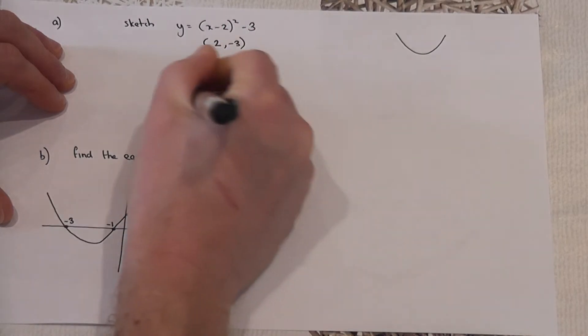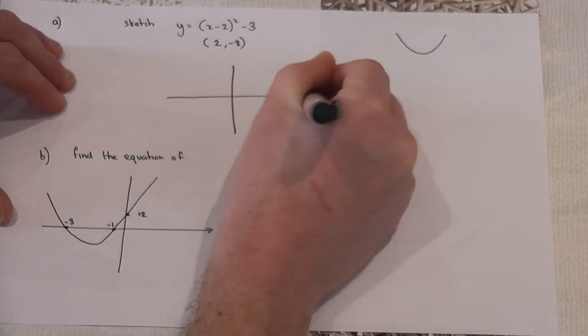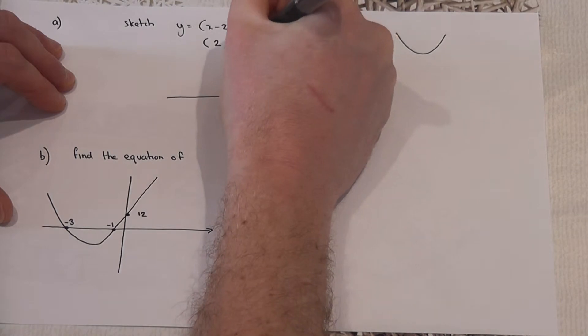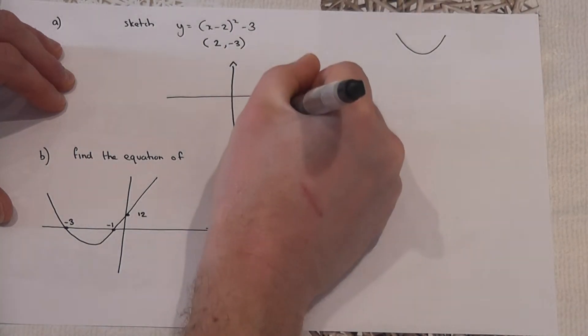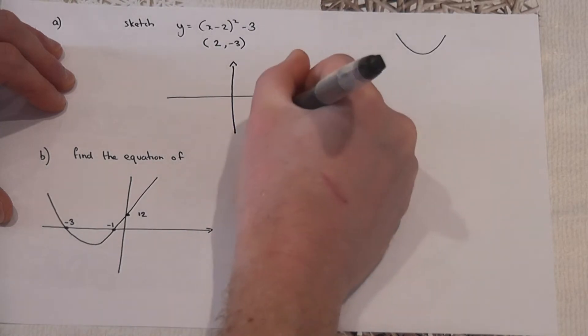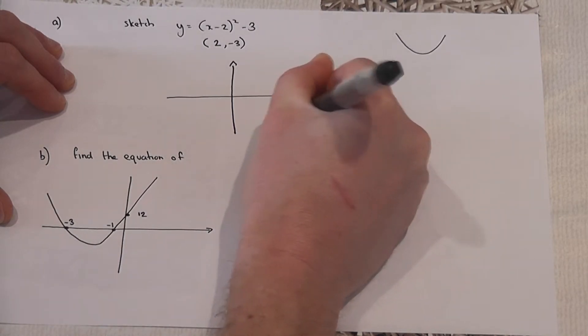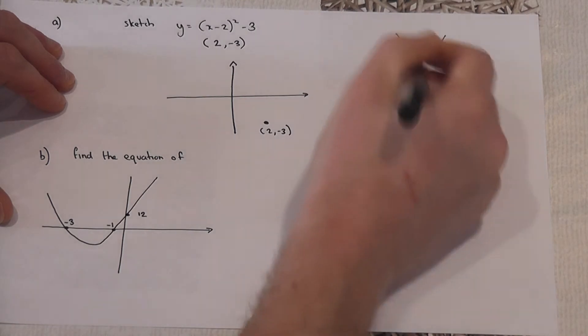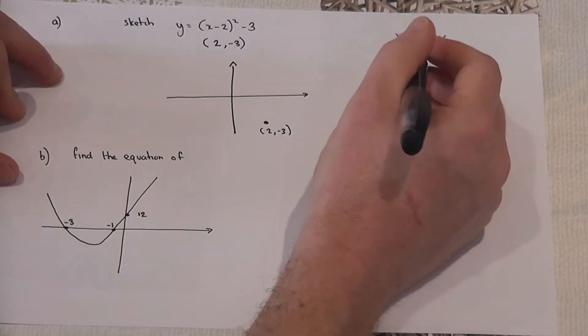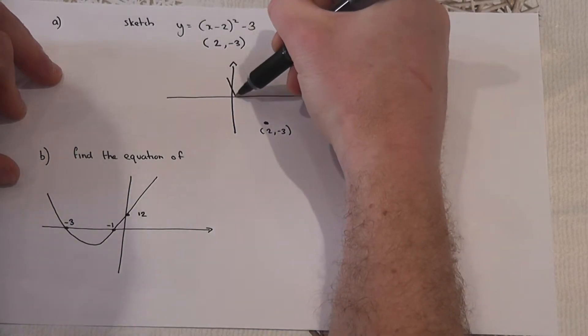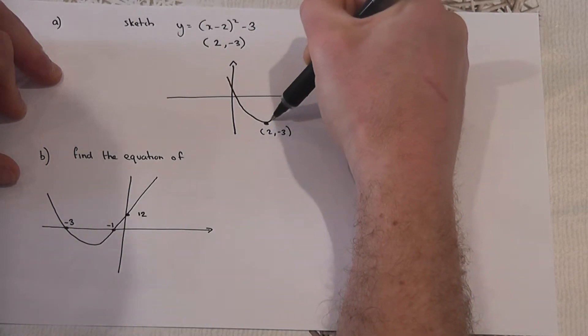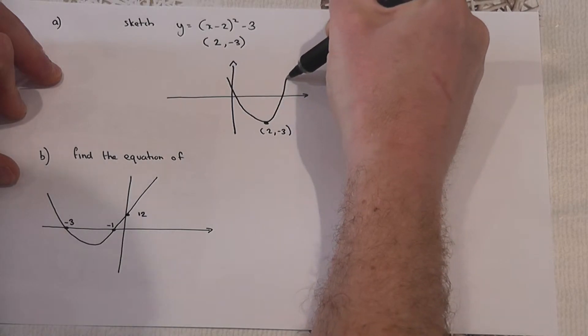It's only a sketch. Two across, three down—that is the coordinate of the bottom of the graph. So it's a smiley face which passes through that coordinate. The graph looks something like this.